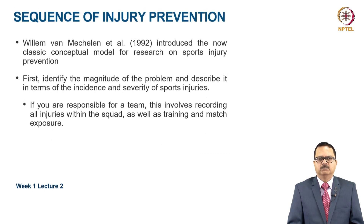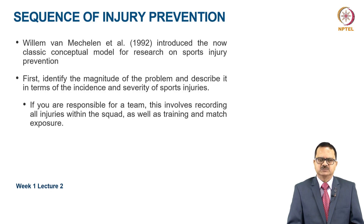Willem van Mechelen in 1992 introduced a classic conceptual model for research on sports injury prevention. The first step is to identify the magnitude of the problem and describe it in terms of the incidence and severity of sports injuries. For example, if you are responsible for a team, record all injuries within the squad as well as training and match exposure.